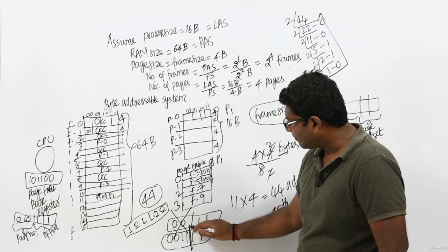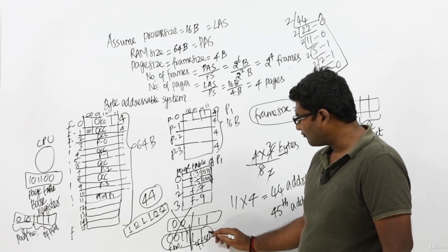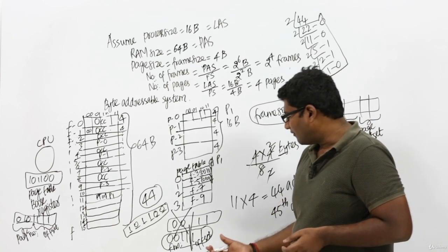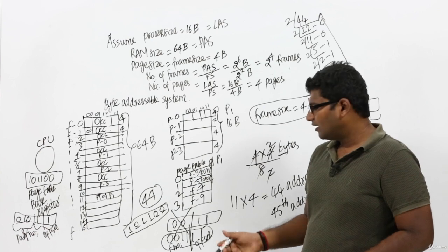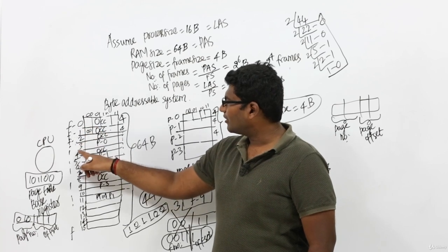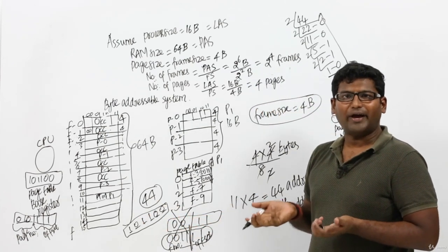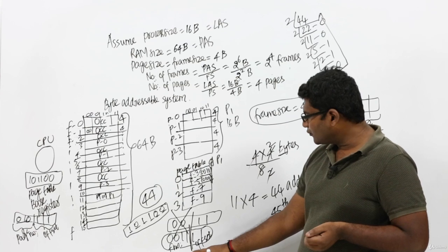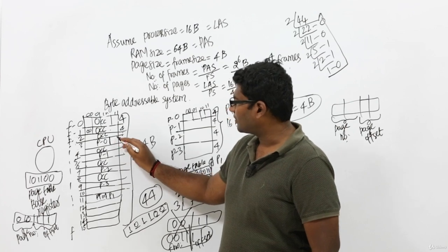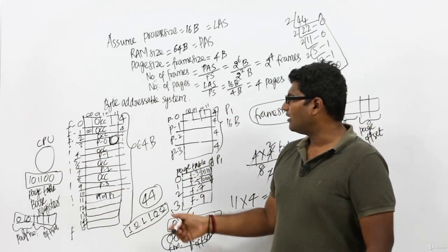Using the frame number, the CPU goes to the third frame. After going into this frame, it doesn't know which byte to access, so it uses the offset. The offset indicates 11, so after going to the third frame it takes the last byte. This is the exact byte the CPU requested, and it will be returned to the CPU, which will happily execute this line.